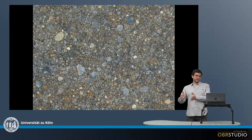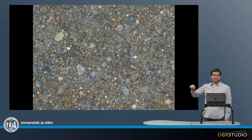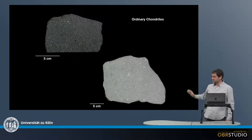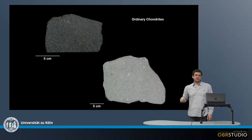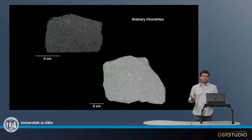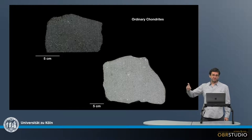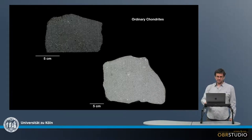Although, in the case of carbonaceous chondrites for example, there would be more matrix material in between. So these are two additional images of ordinary chondrites. Again you can see the quite speckled appearance here, which are again all these chondrules.